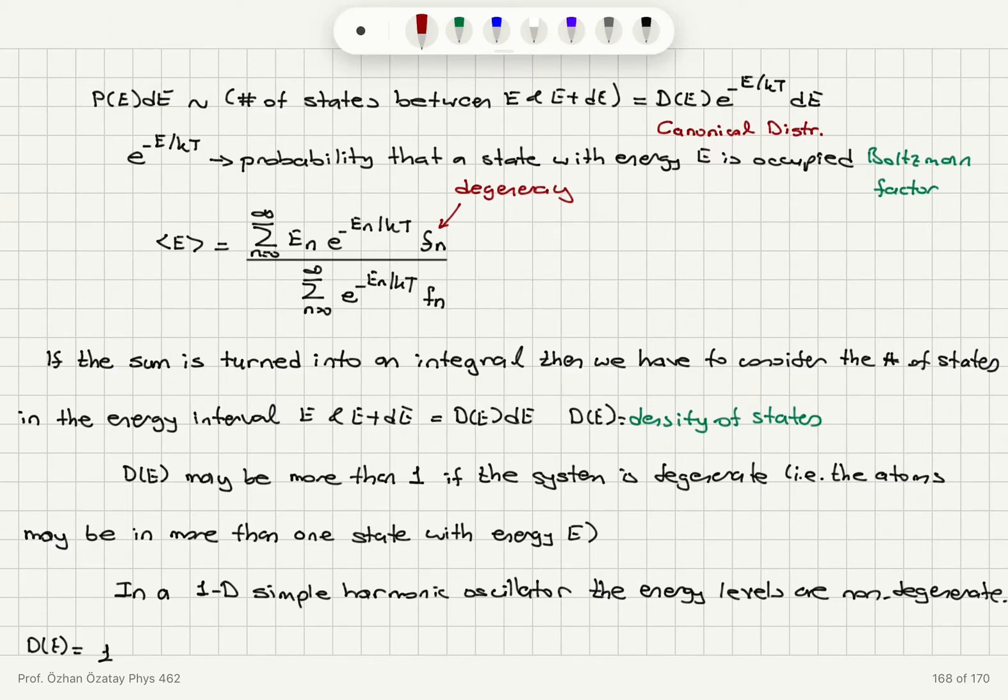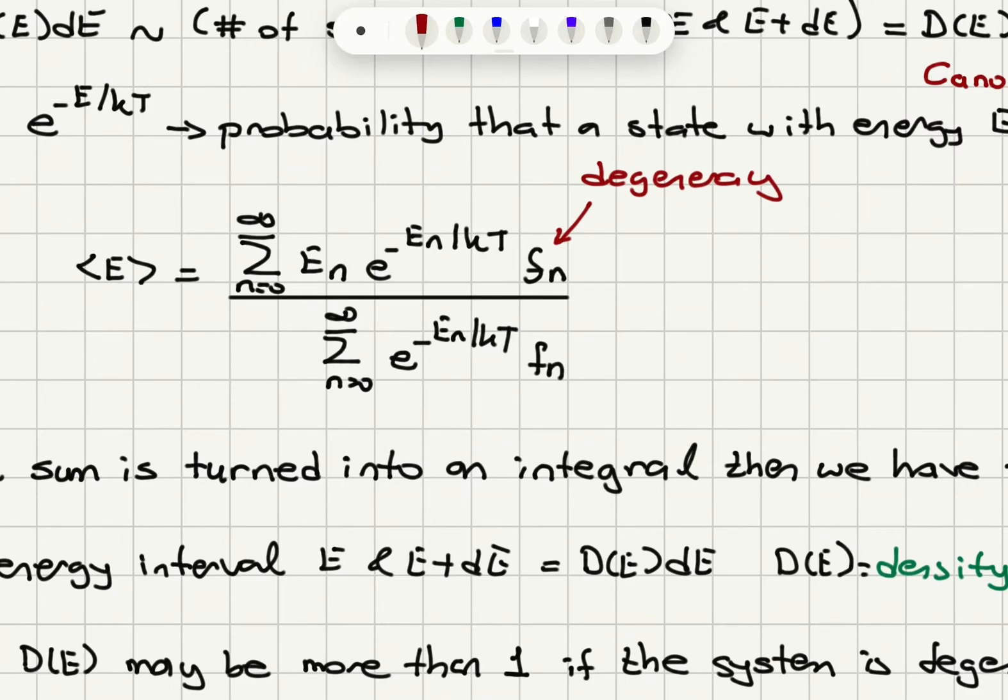E to the minus E over kt describes the probability that a state with energy E is occupied. That's the Boltzmann factor. The average energy is sum N equals 0 to infinity, energy of the nth state En, e to the minus En over kt, times degeneracy, divided by sum over N equals 0 to infinity, e to the minus En over kt, fn. That is called z, the partition function.